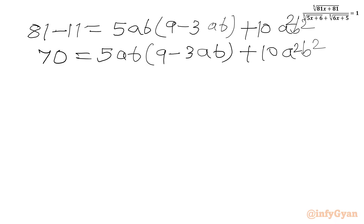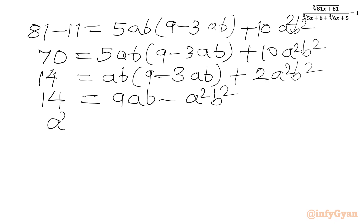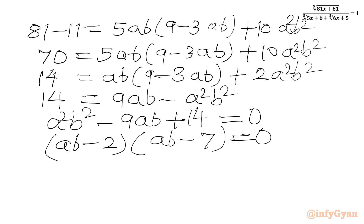Dividing by 5: 14 equals ab times 9 minus 3ab plus 2 a squared b squared, which simplifies to 9ab minus 3a squared b squared plus 2 a squared b squared, giving a squared b squared minus 9ab plus 14 equal to 0. Factoring: ab minus 2 times ab minus 7 equals 0, since 2 times 7 is 14 and 2 plus 7 is 9. So ab equals 2 or ab equals 7.